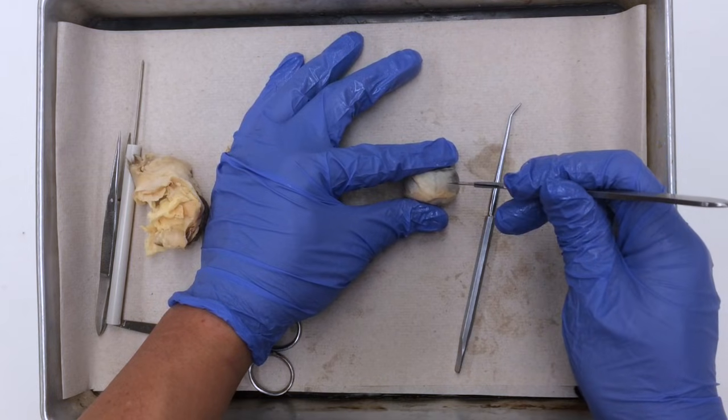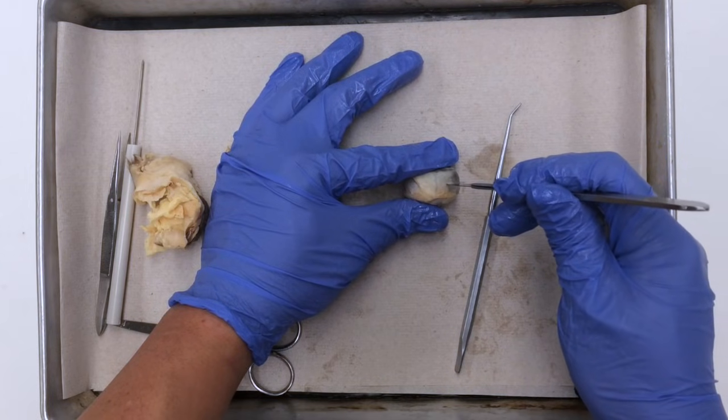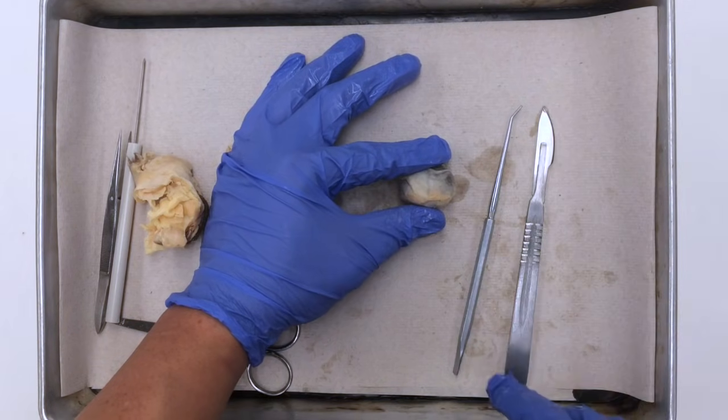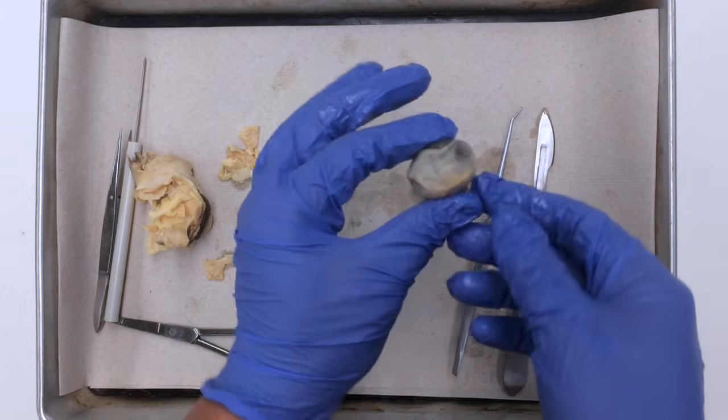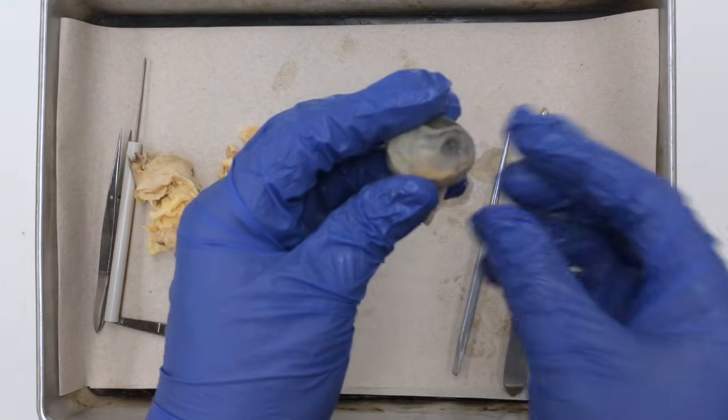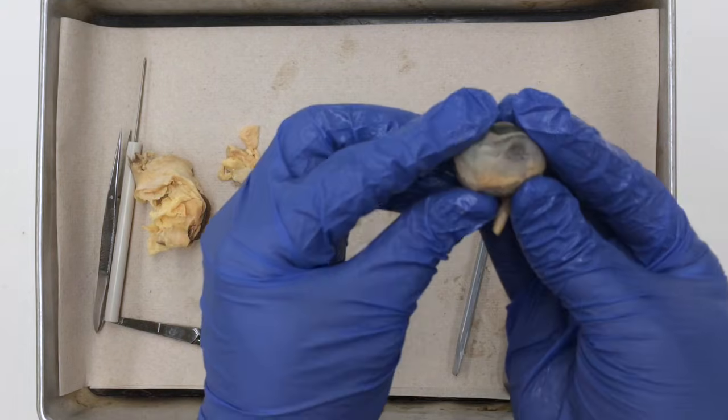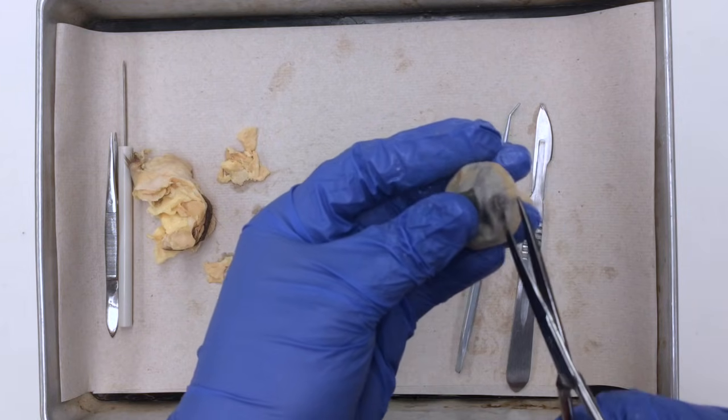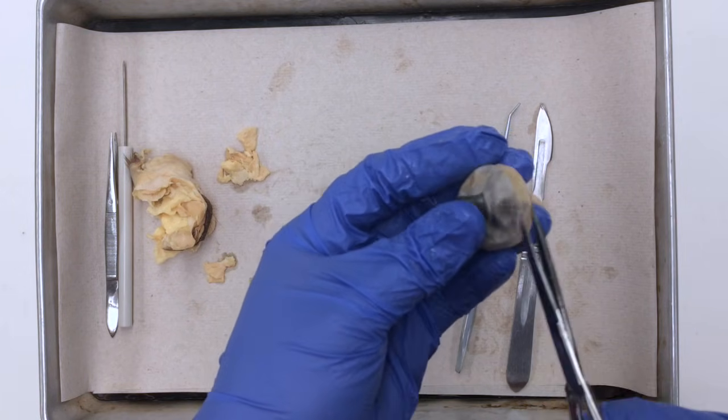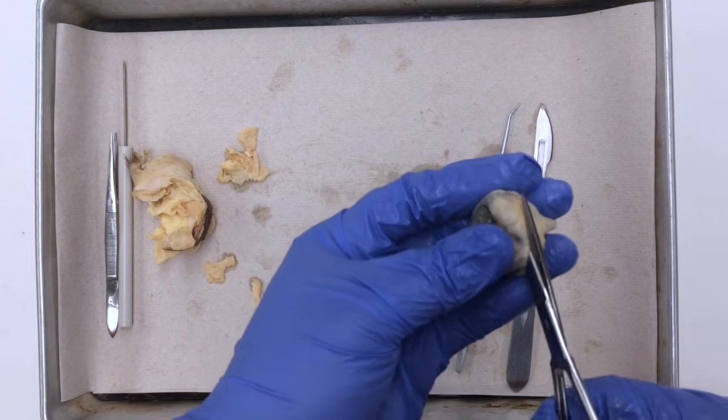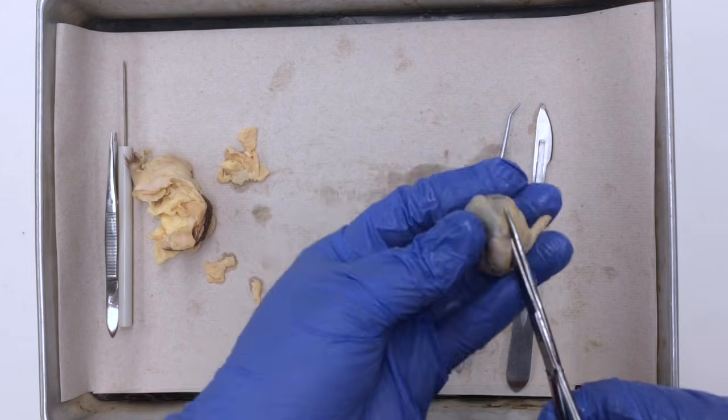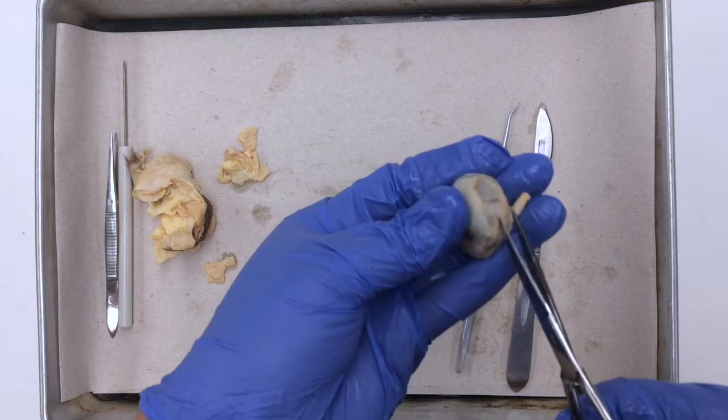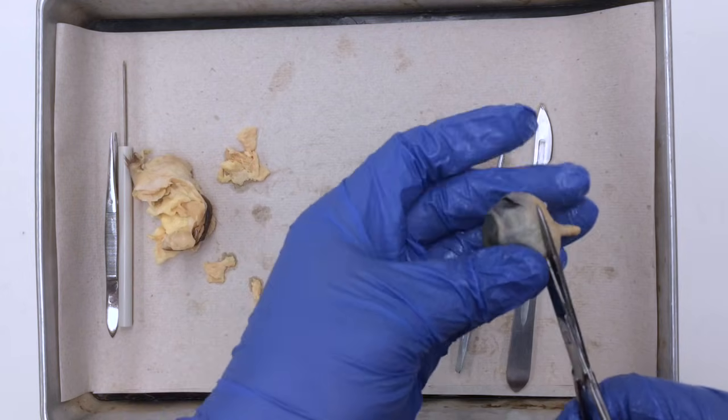Gently make an incision with the tip of the scalpel, and you're going to notice there's a lot of fluid oozing from the eyeball. That fluid is nothing more than the fluid that was preserving the eyeball, as well as some of the fluids which are normally found within the chambers of the eye. Cutting along the coronal plane of the eyeball, I'm going to split the eyeball into two halves, an anterior half and a posterior half.